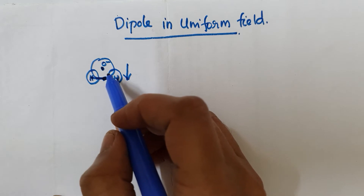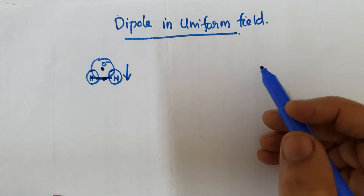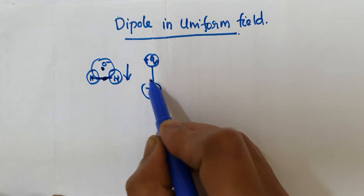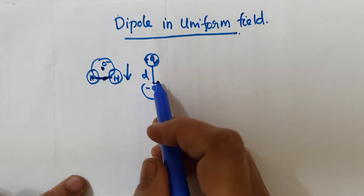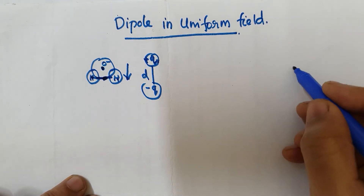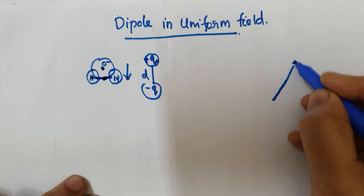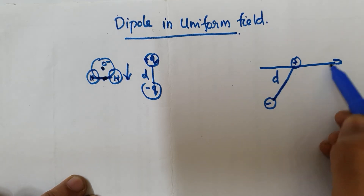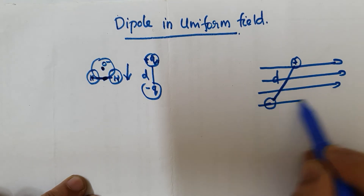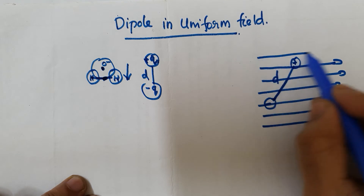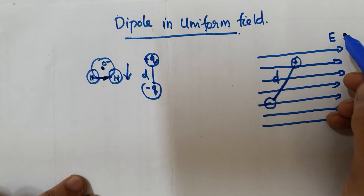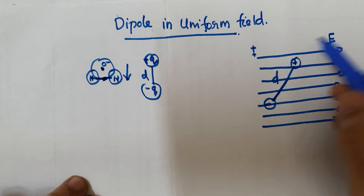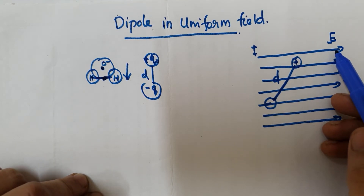A dipole consists of two equal and opposite charges separated by a distance d. When this dipole is placed in a uniform electric field, the direction of the field goes from positive to negative. We now consider the forces acting on each charge of the dipole due to the applied electric field.